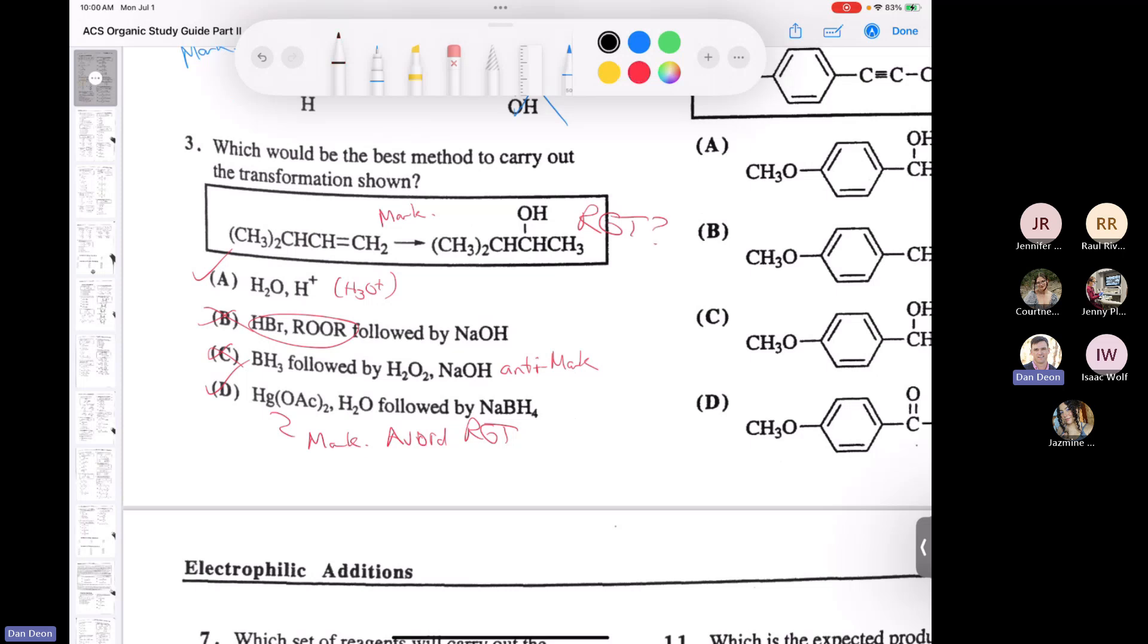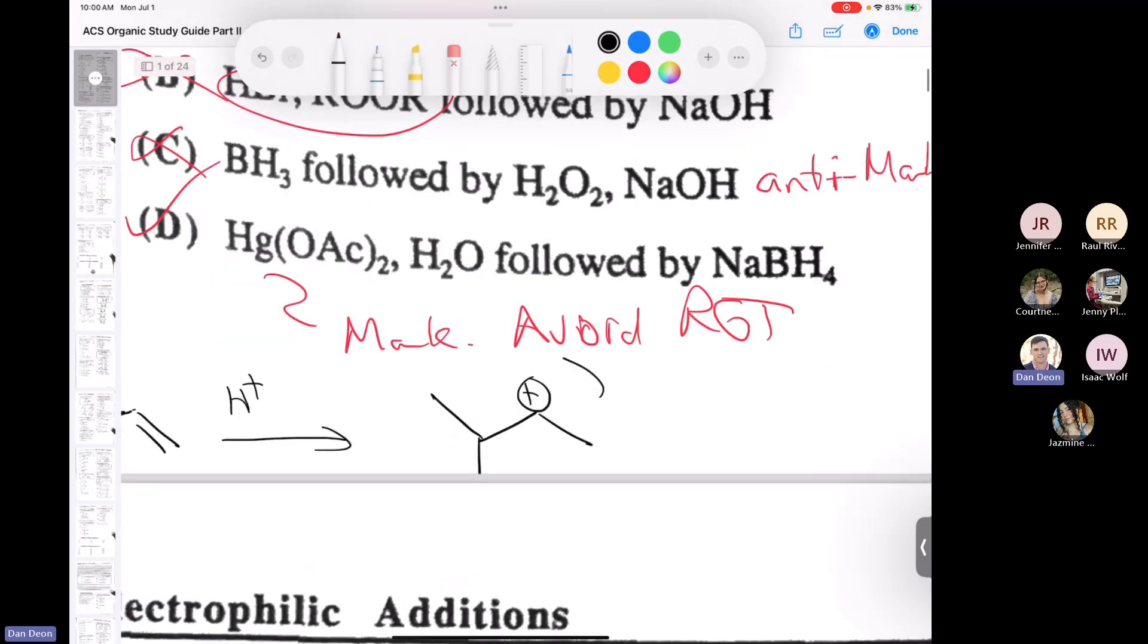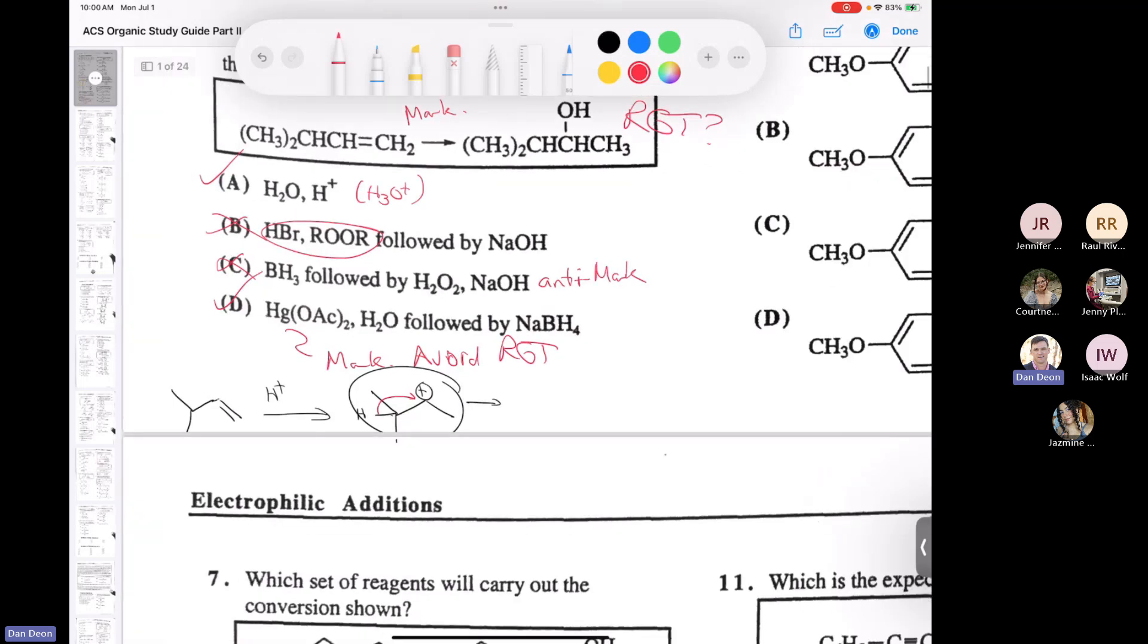So if I write down the bond line structure of the compound, which is this, and we've seen this compound many times. If I just use Markovnikov conditions, I'm going to end up with this carbocation. Let me ask you, this carbocation, is it going to undergo a rearrangement? Would it? Yes or no. And it's not designed to fool you or anything. Exactly. Thanks, Jenny. Absolutely. Right. This is totally going to undergo a rearrangement.